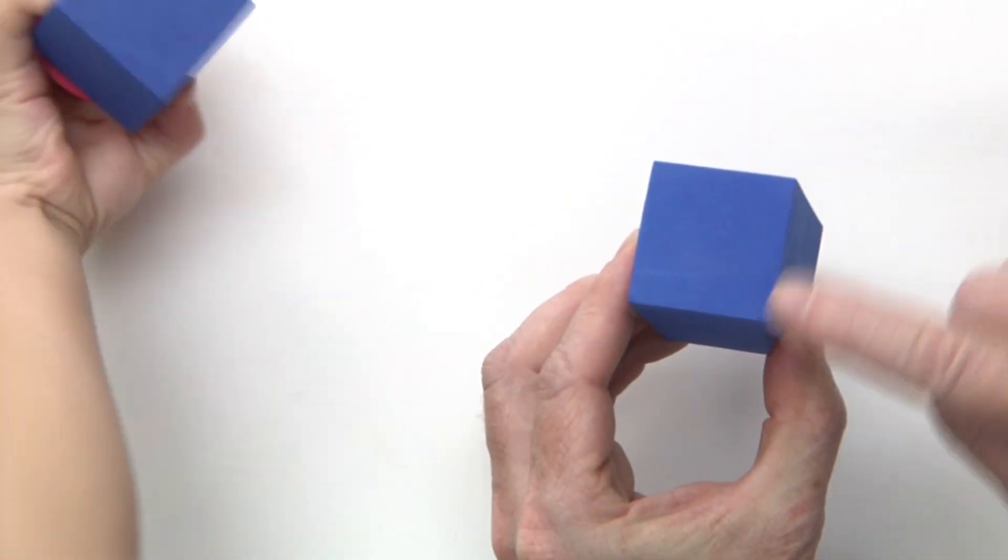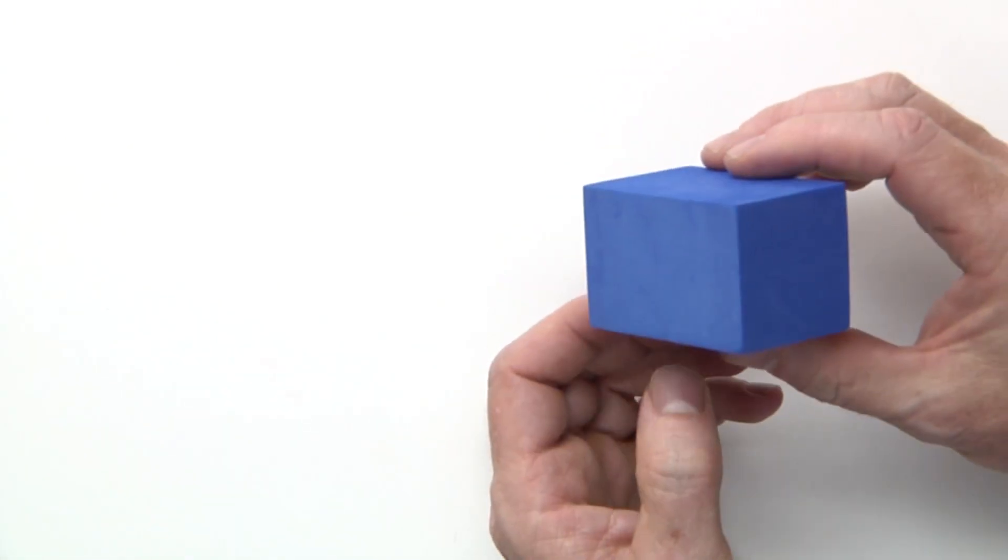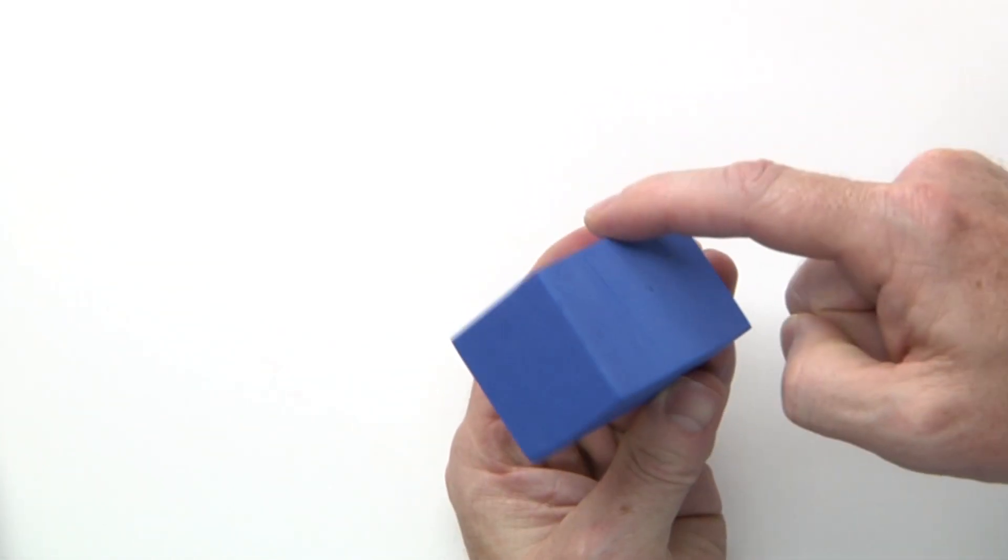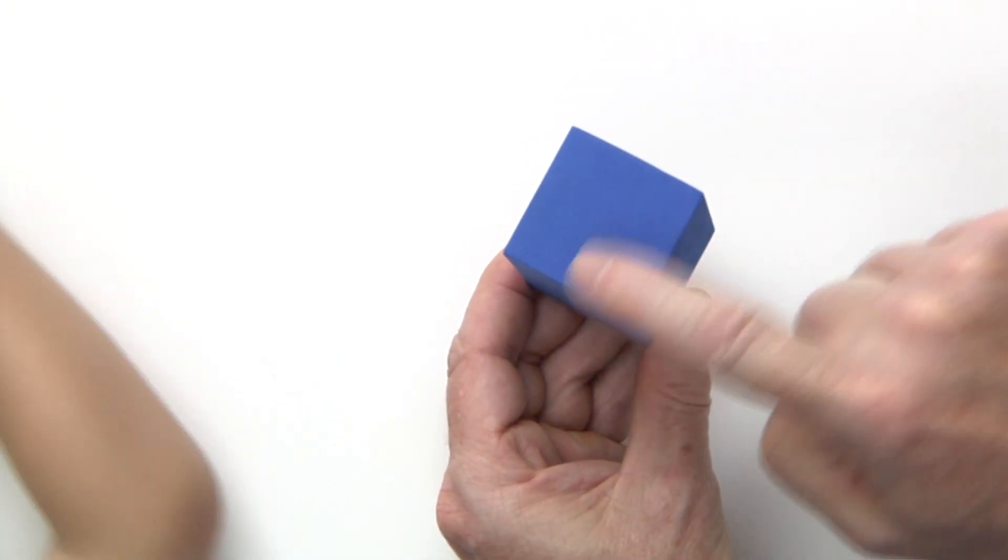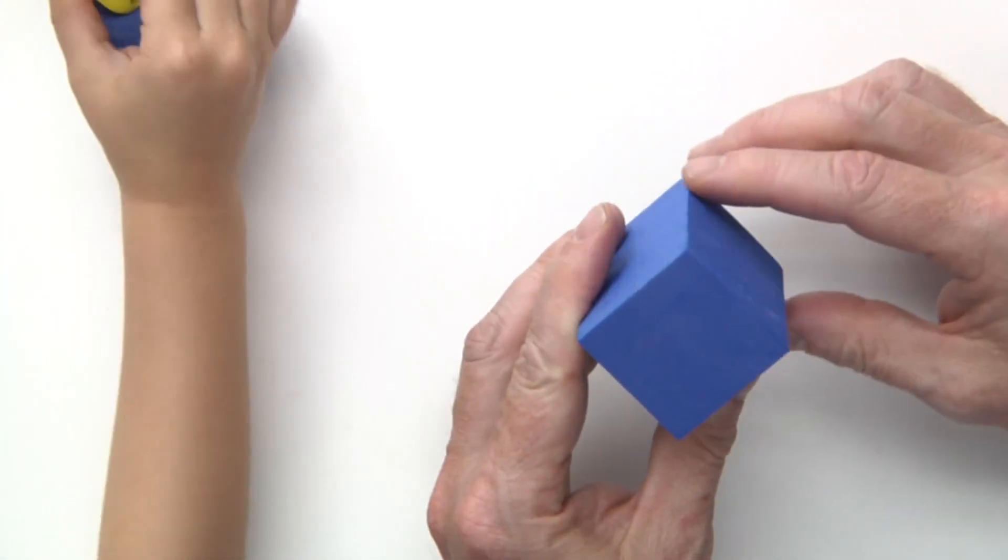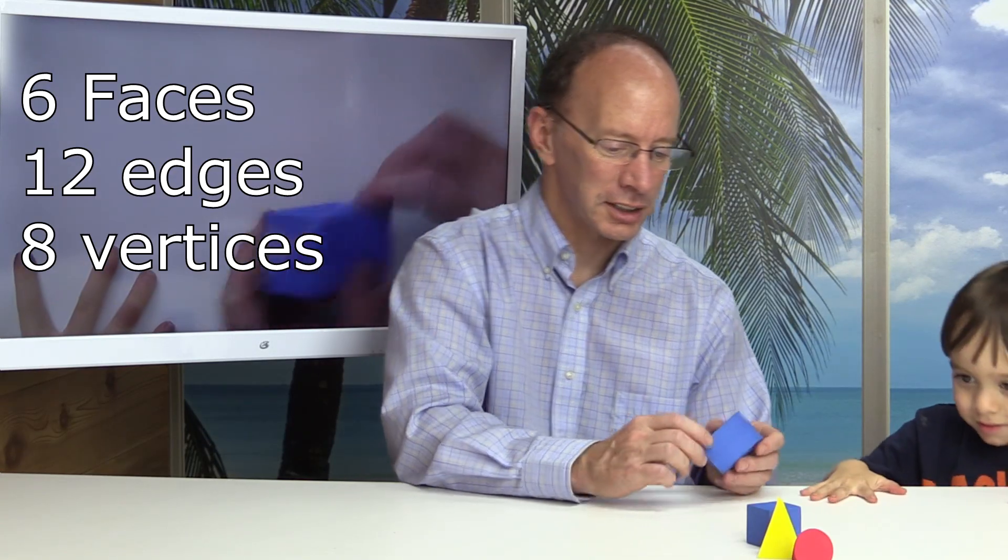And we will have 1, 2, 3, 4, 5, 6, 7, 8 vertices. Let's count the edges. 1, 2, 3, 4, 5, 6, 7, 8, 9, 10, 11, 12 edges. So there are 12 edges on a rectangular prism and a cube.